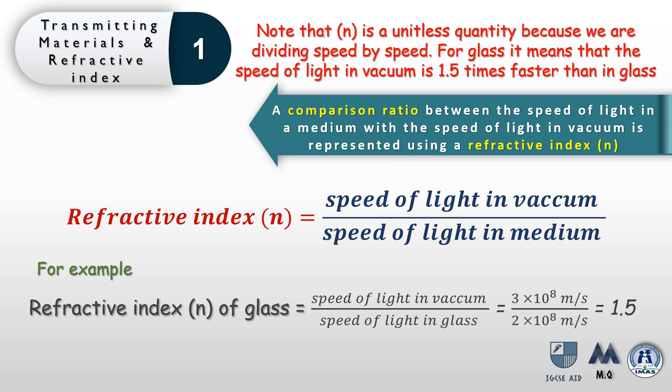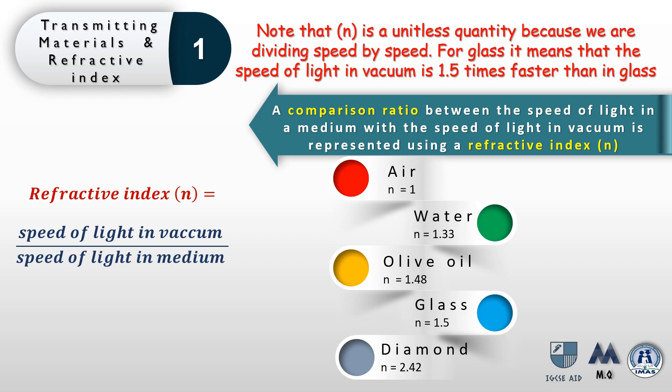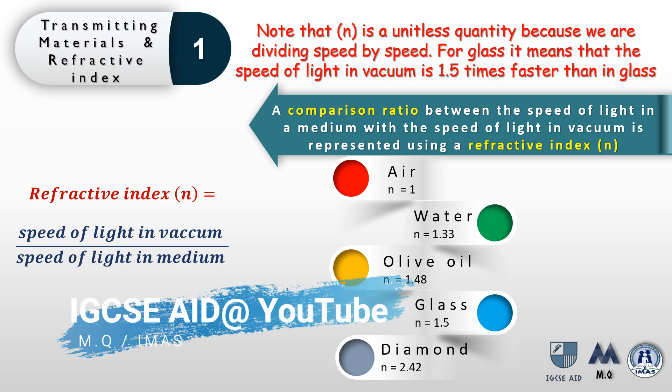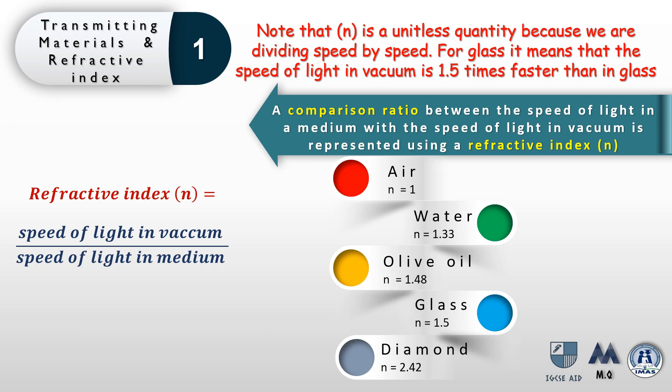For our example of glass, a value of 1.5 means that the speed of light in vacuum is 1.5 times faster than in glass. Comparing different transmitting materials, as the density of the material increases, the refractive index also increases — with a high value of 2.42 in diamonds and a value of 1 in air, since the speed of light in air is about the same as in vacuum.